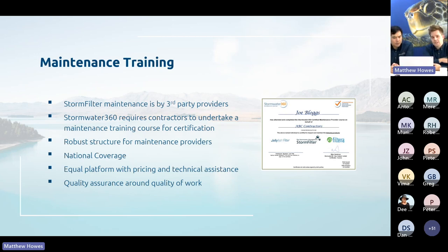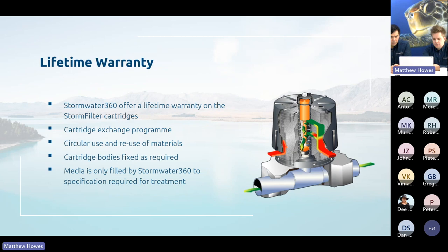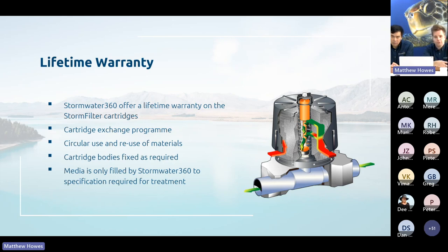Maintenance is performed by third-party providers, not by Stormwater 360 ourselves. We require contractors to complete a training course, meaning there is national coverage with an equitable platform — wherever you are in the country, whoever is doing the work will be able to do it properly and have equitable access to cartridges and pricing. We also operate a lifetime warranty on the Storm Filter cartridges. Through the cartridge exchange program with an approved contractor, cartridges are returned to us, refurbished, refilled, and reused in other devices — lowering our environmental footprint and bringing costs down for asset owners.